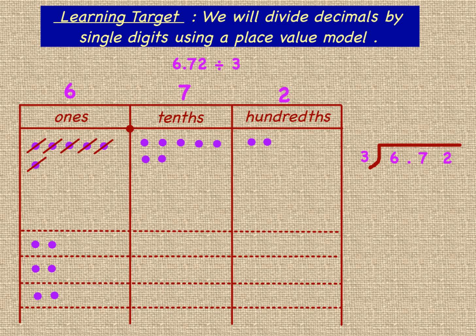We'll take a look and see how many ones we were able to put into each group, and we see that there are 2 ones. That's what's represented on our algorithm over here. We place 2 ones in the ones column on our standard algorithm. We were able to distribute all 6 of them. When we subtract those 6, in this case we have 0 left. So we can move on to the tenths column.